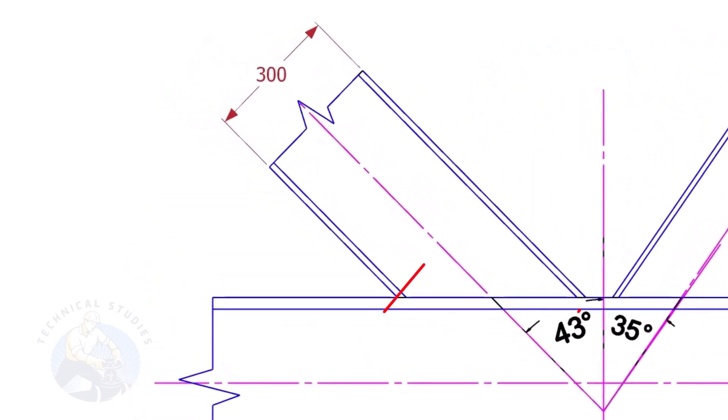Let us calculate the cutback of this beam. The formula to calculate the cutback is tan degree multiplied by the size of the beam.